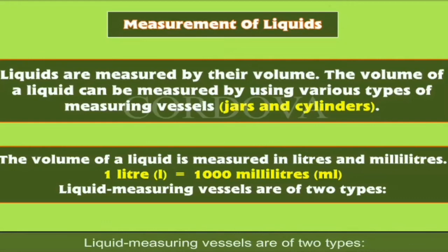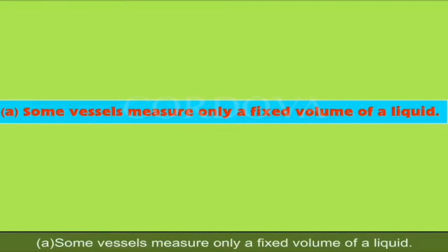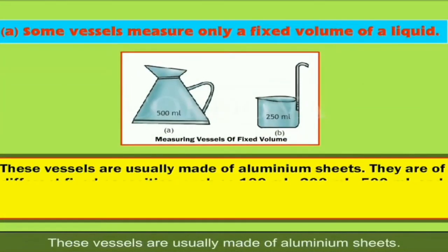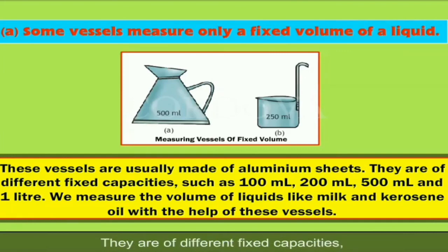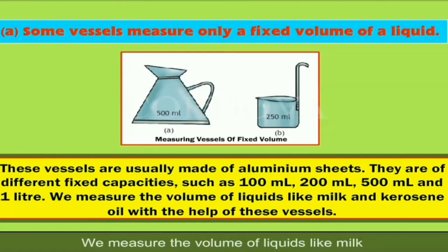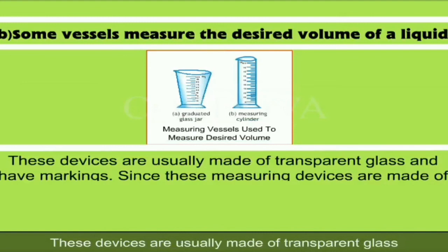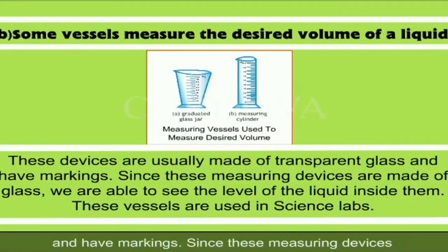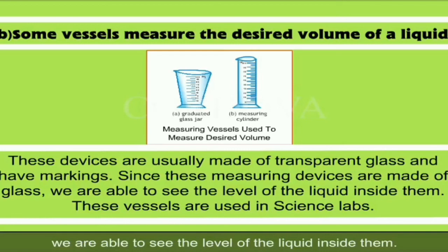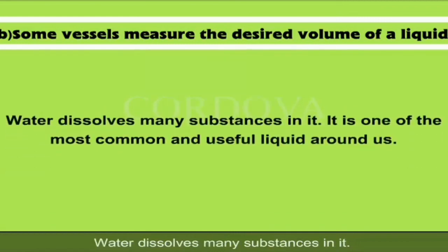Liquid measuring vessels are of two types. Some vessels measure only a fixed volume of a liquid. These vessels are usually made of aluminium sheets and come in different fixed capacities such as 100 millilitres, 200 millilitres, 500 millilitres and 1 litre. We measure the volume of liquids like milk and kerosene oil with these vessels. Some vessels measure the desired volume of a liquid — these are usually made of transparent glass and have markings, allowing us to see the level of the liquid inside. These vessels are used in science labs.